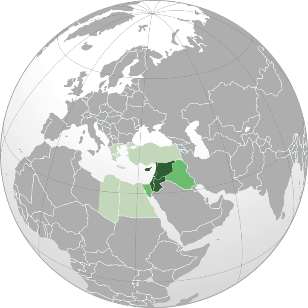The term Levant, which appeared in English in 1497, originally meant the east in general or 'Mediterranean lands east of Italy'. It is borrowed from the French Levant, meaning 'rising', referring to the rising of the sun in the east, or the point where the sun rises. The phrase is ultimately from the Latin word lever, meaning 'lift, raise'.